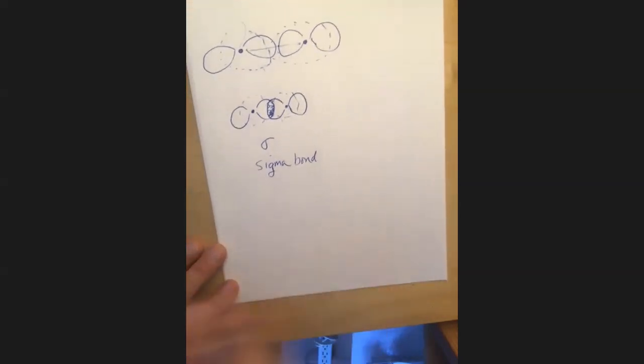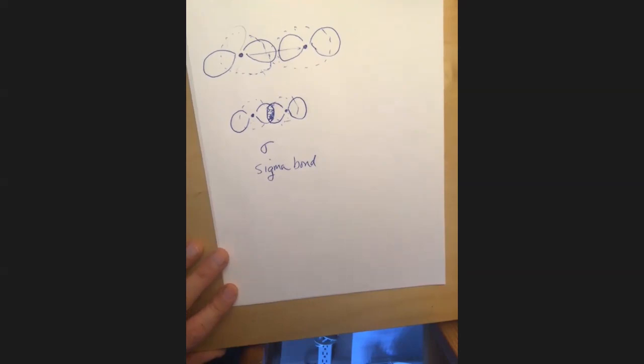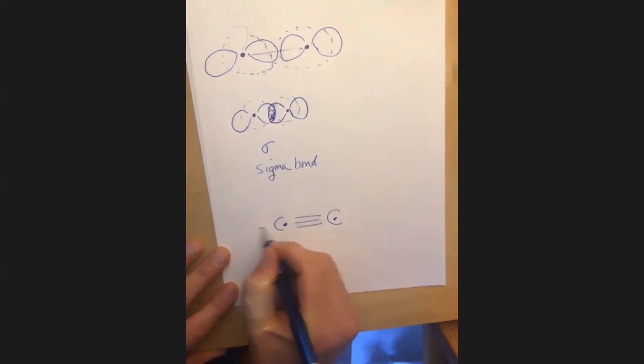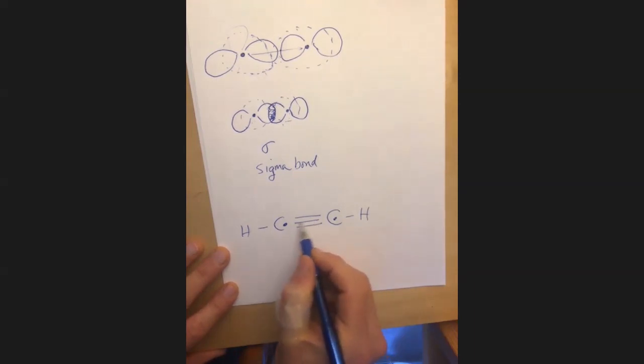So double and triple bonds are only made up of pi bonds. No, I don't think so because I think, I got to think about this for a second. Okay. So I've got an atom and it's triply bonded. So let's say a carbon to another carbon with a triple bond and a hydrogen and a hydrogen. Okay.